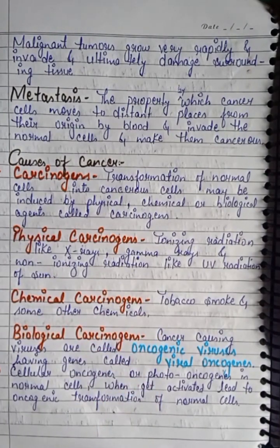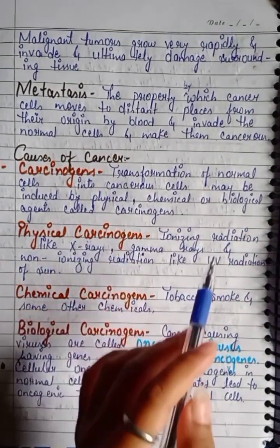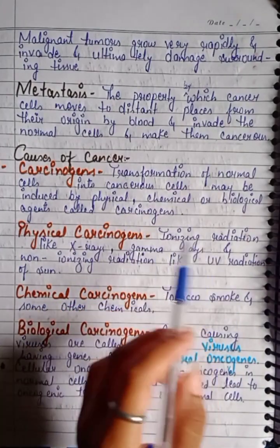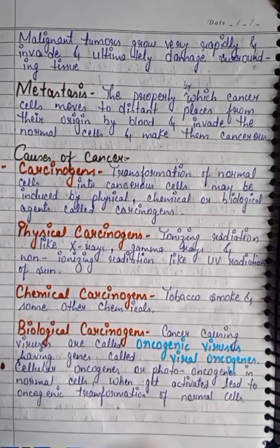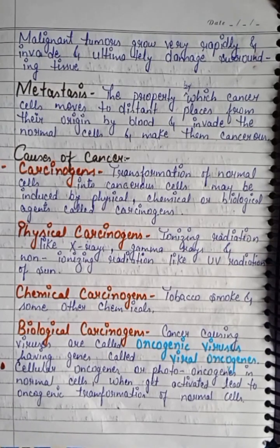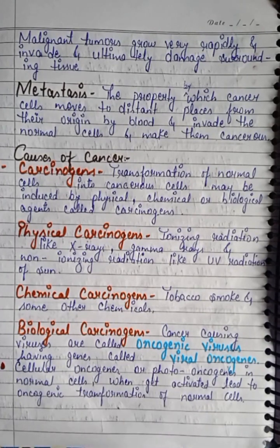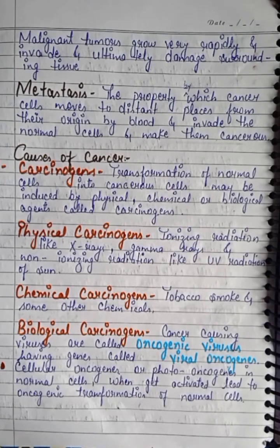Causes of cancer: transformation of normal cells into cancerous cells may be induced by physical, chemical, and biological agents called carcinogens. Physical carcinogens include ionizing radiation like X-rays and gamma rays, and non-ionizing radiation like UV rays from the sun. Chemical carcinogens include tobacco smoke and other chemicals. Biological carcinogens are cancer-causing viruses called oncogenic viruses, which carry viral oncogenes. Cellular oncogenes and proto-oncogenes, when activated in normal cells, lead to oncogenic transformation into cancerous cells.